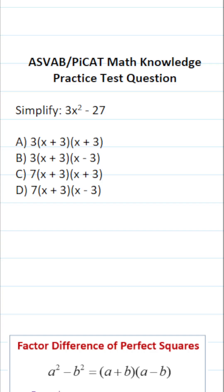This math knowledge practice test question for the ASVAB and PyCat says simplify 3x squared minus 27. Again on the ASVAB and PyCat you're not given a calculator or reference sheet, so for that reason I recommend you get in the habit of copying things down and working them out on your own scratch paper.